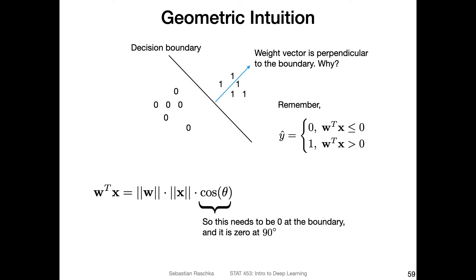The intuition behind the 90-degree angle is: if we compute the dot product of the weights and the feature vector — ignoring the bias — we make a decision at zero, whether the dot product is greater or smaller than zero. So if it's less than or equal to zero (the net input), we predict class zero, and if it's greater than zero, we return one. Everything hinges upon that zero threshold.